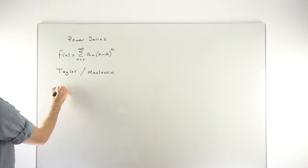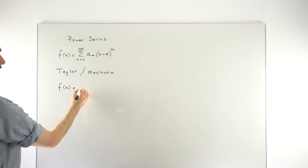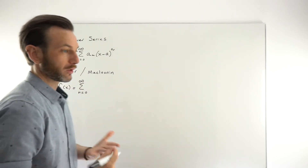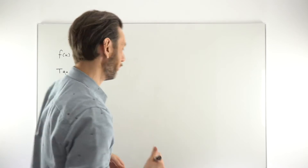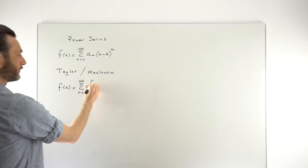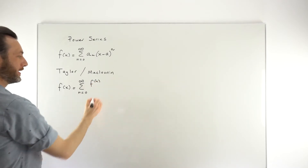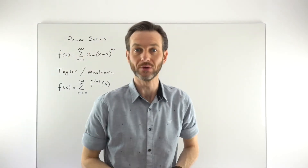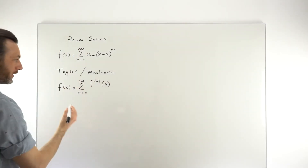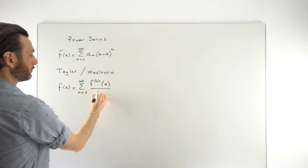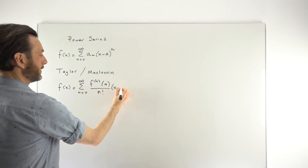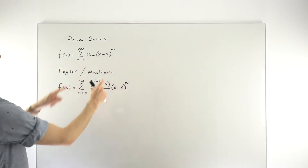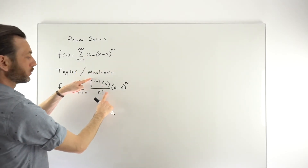If we wanted to represent some function by a Taylor series, that's going to look like the sum from n equals 0 to infinity of the nth derivative of that function — so f superscript n — evaluated at the point a, divided by n factorial, times x minus that center point a to the power of n. A Taylor series is centred at a. All we've done is generate our a sub n term by taking the nth derivative divided by n factorial.